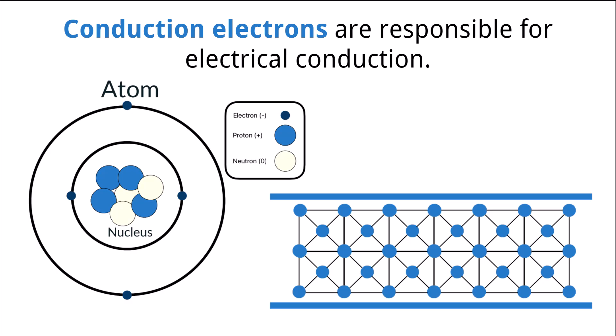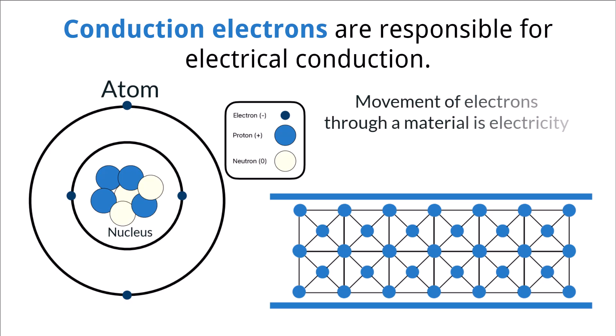The electron and proton are charged particles, and a proton has a positive charge while the electron has a negative charge. This understanding of basic atomic structure is important because the movement of electrons through a material at the atomic level is electricity.